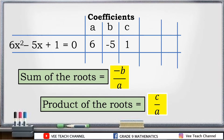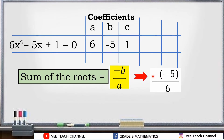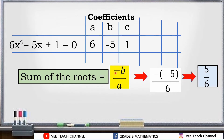Let's solve. In the equation 6x squared minus 5x plus 1 is equal to 0, we can see the coefficients a, b, and c. Substituting into the sum formula: negative b over a gives us negative times negative 5, over 6. Negative times negative 5 is positive, so the sum of the roots is 5 over 6.